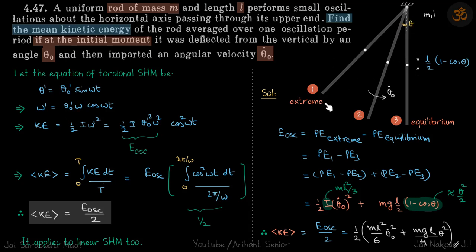...will be of the form θ' = θ₀' sin(ωt). So θ' is the angle turned by the body and θ₀' is the maximum angle the body turns to.